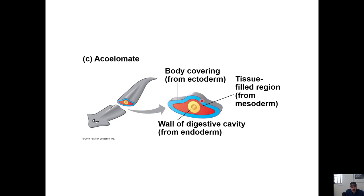This group is called an acoelomate - meaning it has no body cavity. It has three tissue layers and no body cavity. Those layers are the ectoderm, which develops into the skin and body covering; the mesoderm, which develops into tissues like muscles; and the endoderm, which develops into the digestive cavity. These are the three germ layers - embryonic tissues that develop into more complex parts as the organism grows.